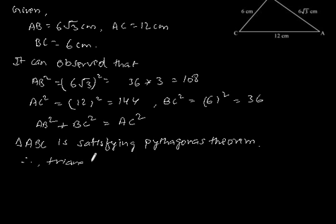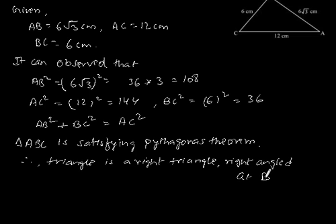Therefore, the triangle is a right triangle, right angled at B.